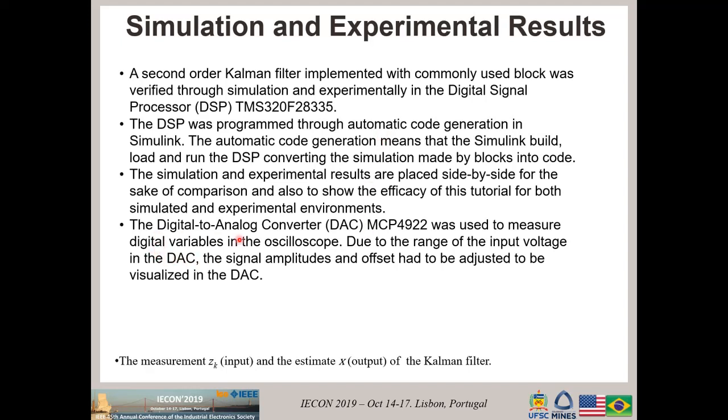In order to see a digital variable which is within the DSP on the scope, I'm using a digital to analog converter, the IC MCP4922. Using this IC plus some configurations in Simulink, I can measure on the scope any digital variable I want. But due to the range of the input signal, I have to make some amplitude adjustments and offsets because the MCP works in a very limited range. But this does not violate the information of the signal.